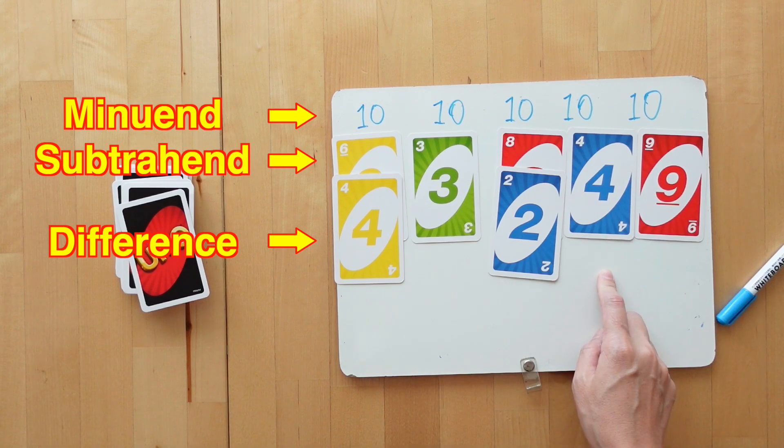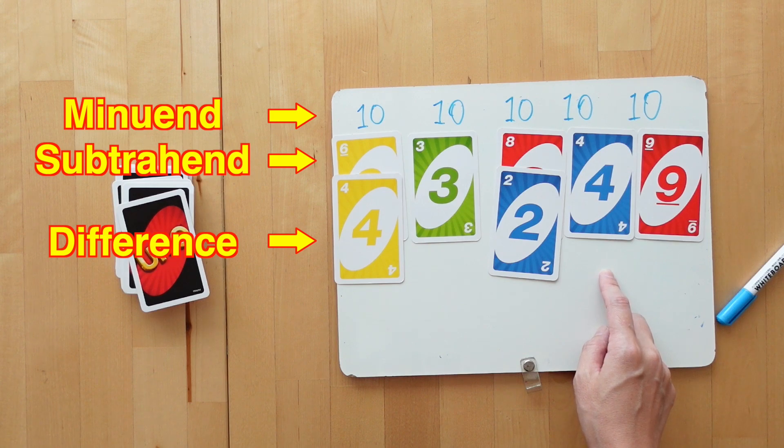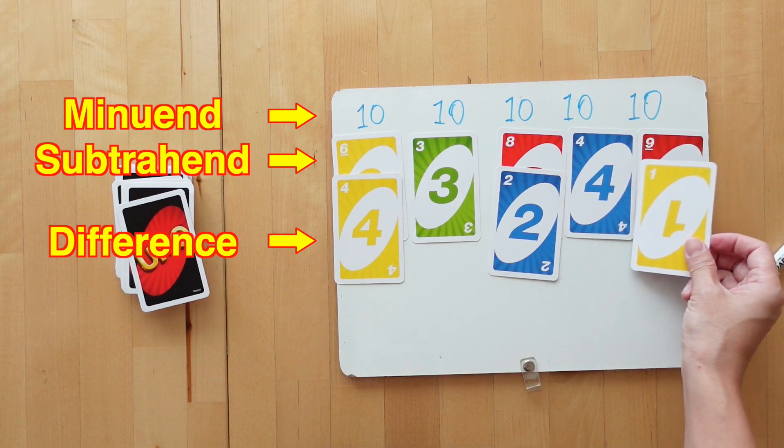10 subtract 4 is 6. I don't have that so let's move on to the last column. The difference between 10 and 9 is 1 so I'll place it here.